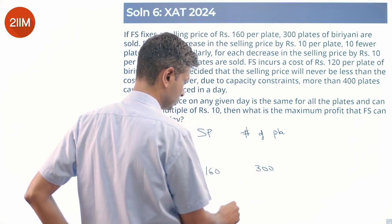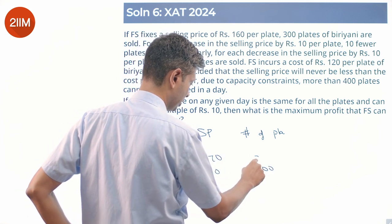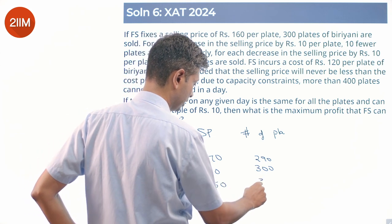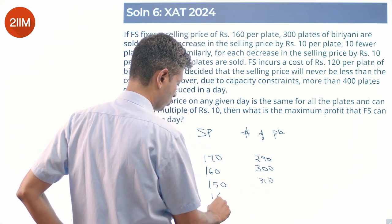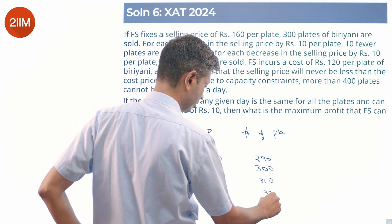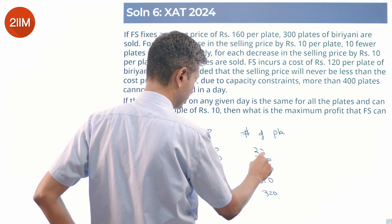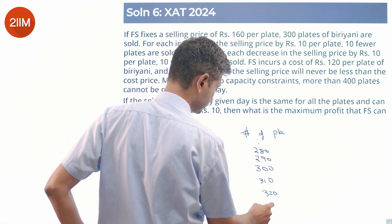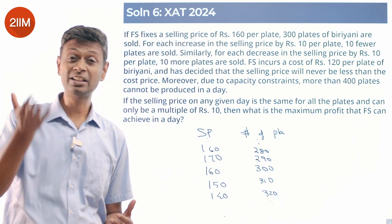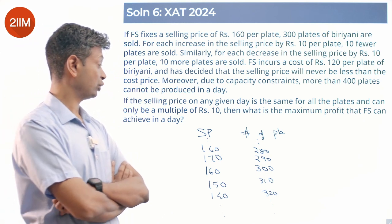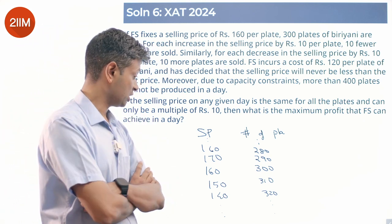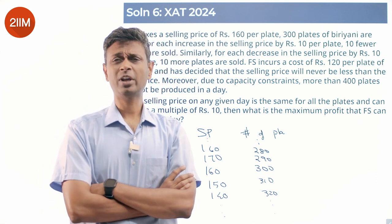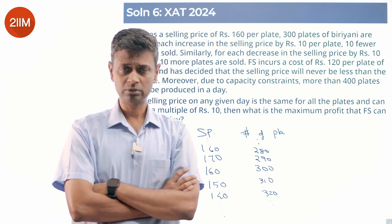At ₹160 we make 300 plates; at ₹170 it will be 290 plates; at ₹150 it will be 310 plates; at ₹140 it will be 320 plates. For maximizing revenue we consider 160×280, 170×290, 160×300, 150×310 — but the question asks for maximum profit, not maximum revenue.